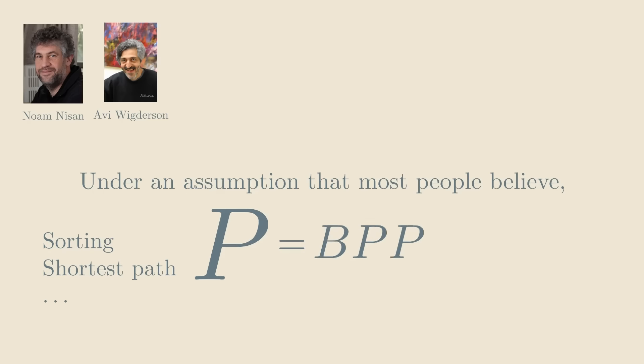Second, BPP stands for bounded probability polynomial time, and it's the class of problems that can be solved with algorithms that only use polynomial time, but that can additionally use randomness. And we require them to be correct with only, say, 99% probability.